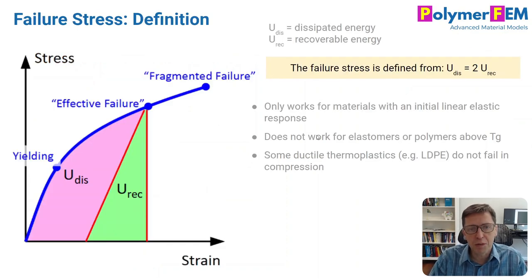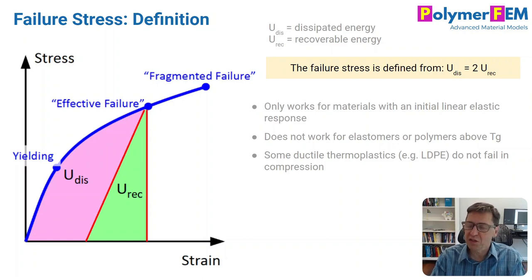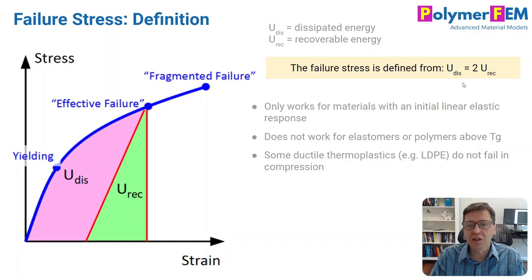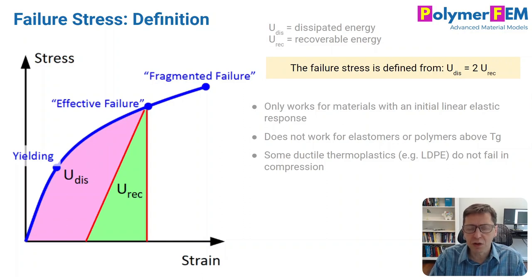The second thing to point out about Christensen's approach is that he completely redefines the whole concept of failure. What you would normally consider failure of a polymer part — when fragments are generated — he calls fragmented failure. He says effective failure occurs before that, and his theory is based on this effective failure. He defines failure stress from an equation where the dissipated energy is equal to twice the recoverable energy, as shown in the figure with the two shaded areas.